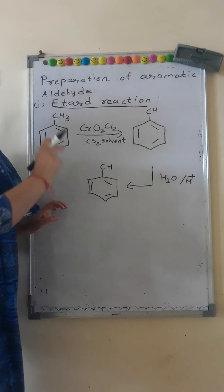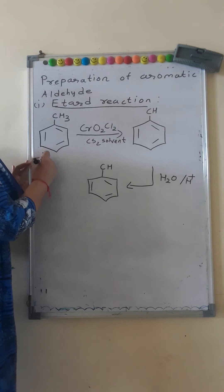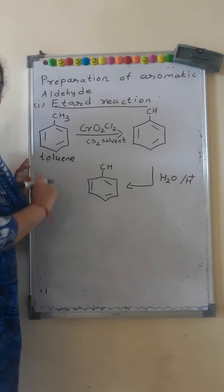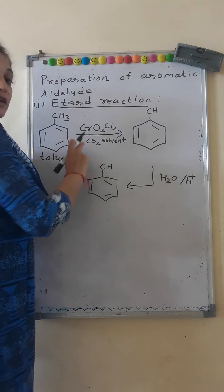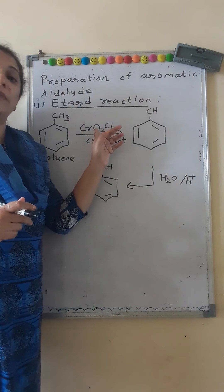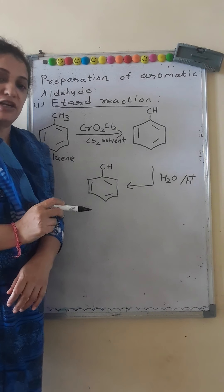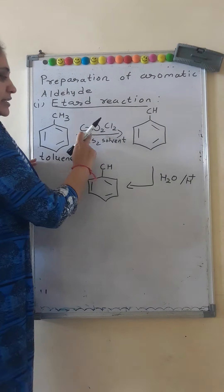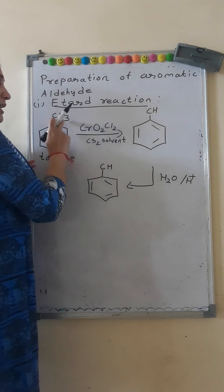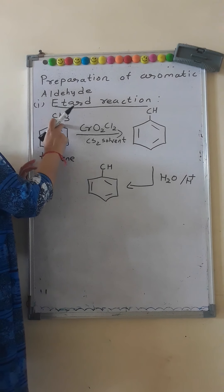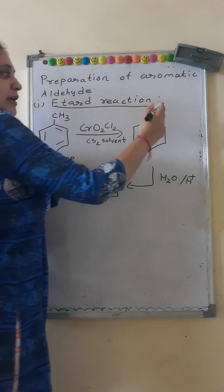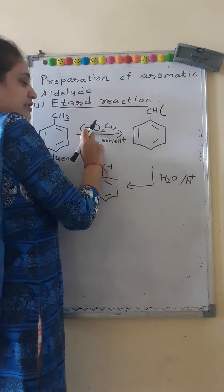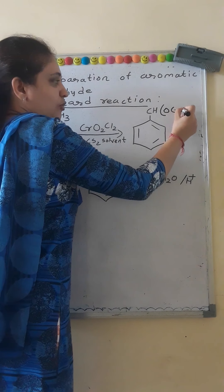It is a name reaction — the Etard reaction. Our starting compound is toluene, that is a benzene ring bonded to CH₃, and the reagent we require is chromyl chloride, formula CrO₂Cl₂, in carbon disulfide solvent. This CrO₂Cl₂ gets added here, and two hydrogens from the CH₃ will be replaced by two O-CrO groups.